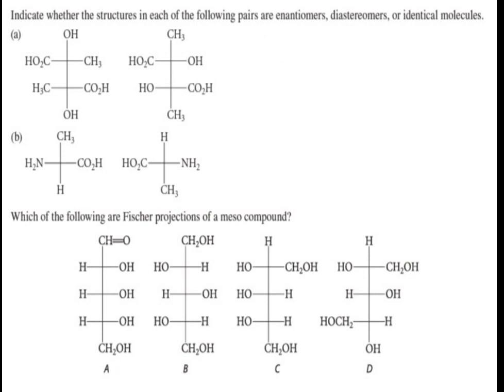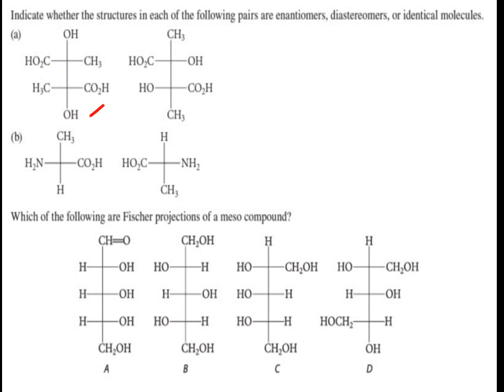Here is a homework problem: indicate whether the structures in each of the following pairs are enantiomers, diastereomers, or identical molecules. A hint: first bring the CH3 groups into the vertical position in both structures, and you will find that the two are identical molecules. For the next pair, simply rotate it 180 degrees in the plane of the paper.